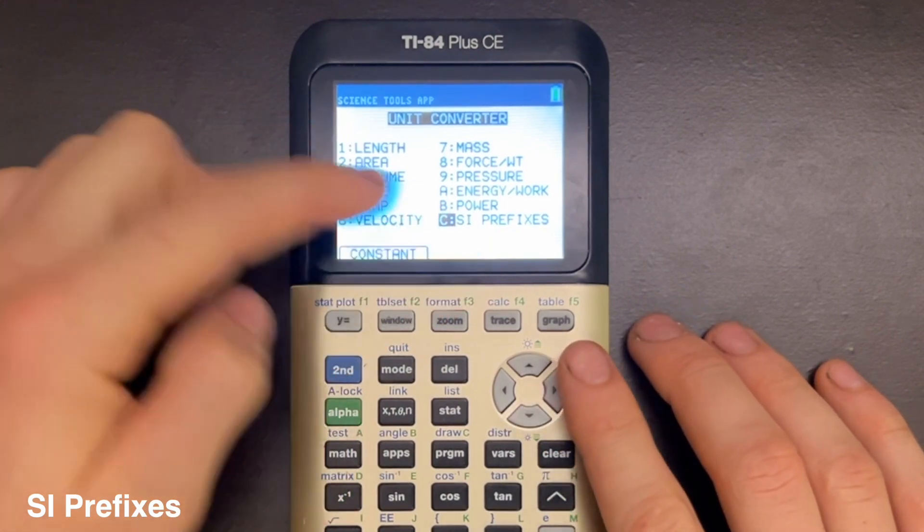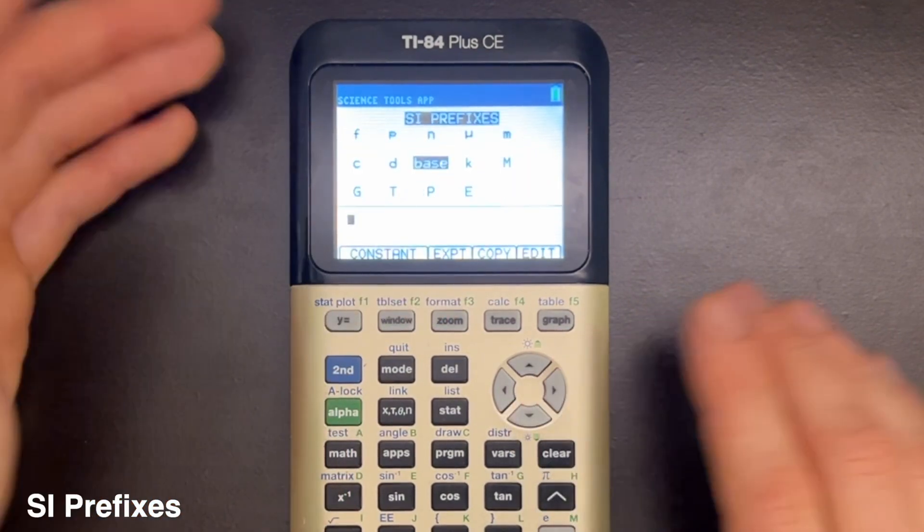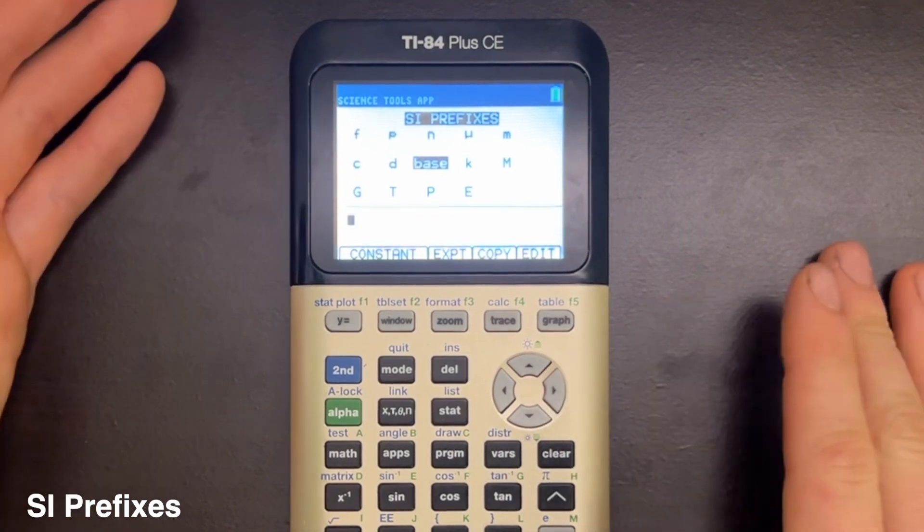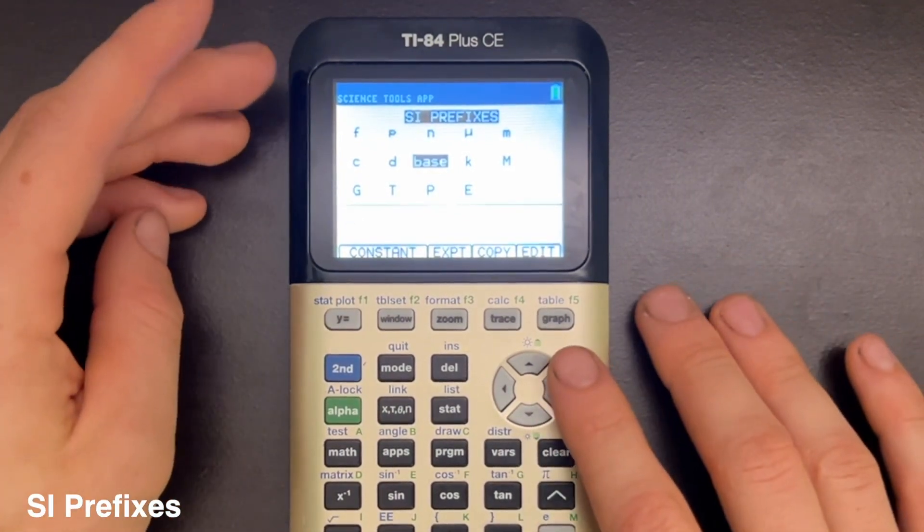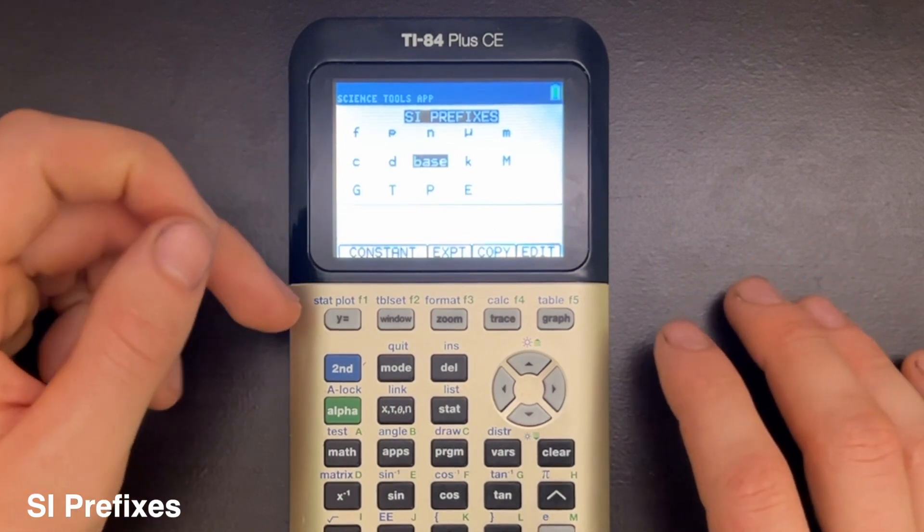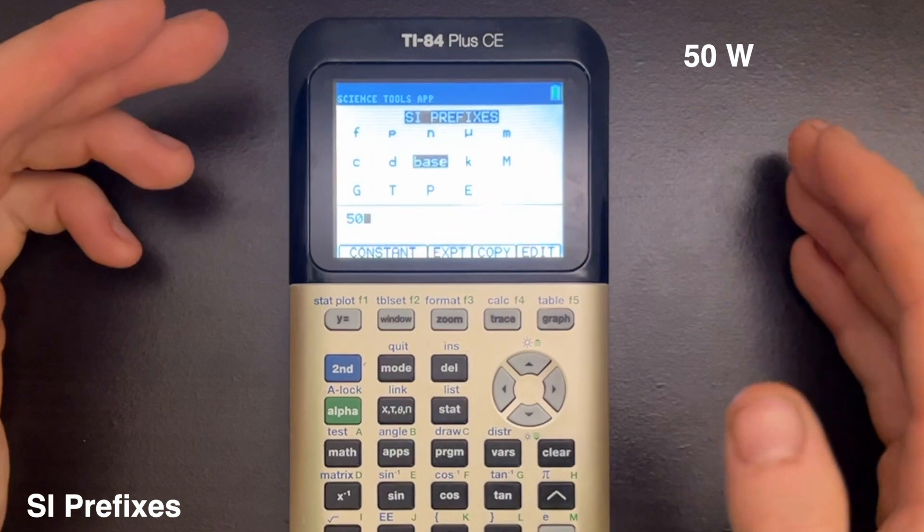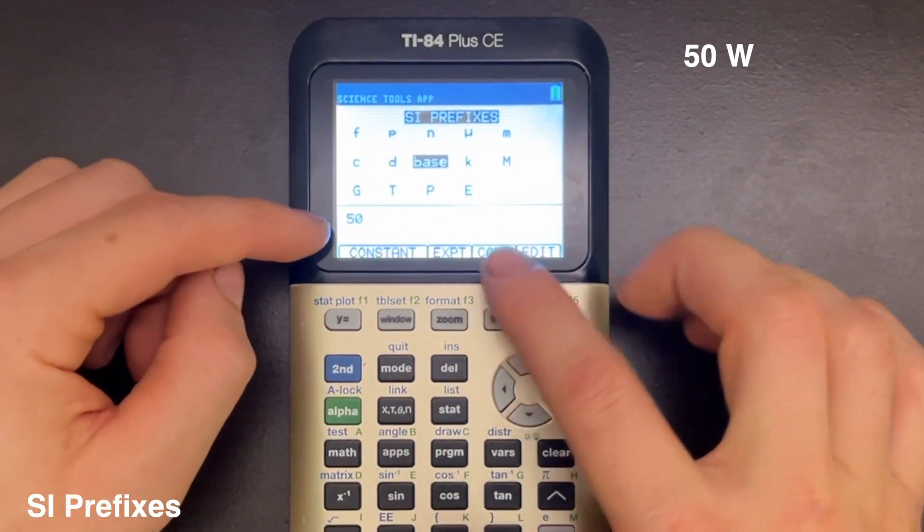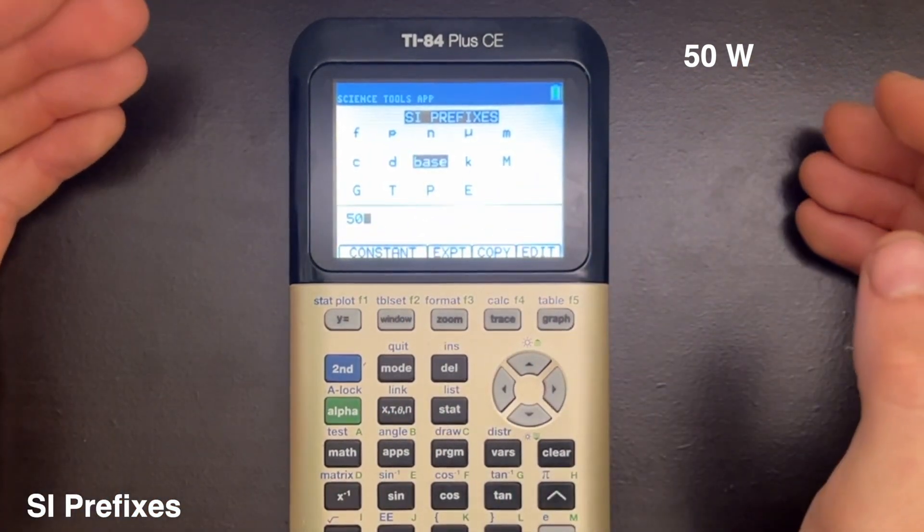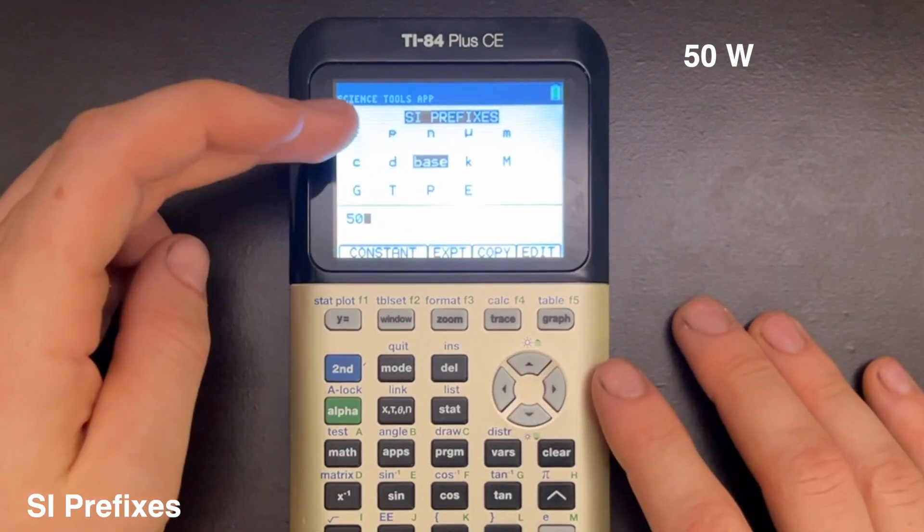But the last thing I'll go over is the final option in the menu here, which is the SI prefixes. This is useful for if you want to know what scaling factor basically is applied to each of the SI prefixes. So say you want to know what 50 watts is in megawatts. So I've just entered 50 here and watts does not have a prefix. So I'll just select Base.